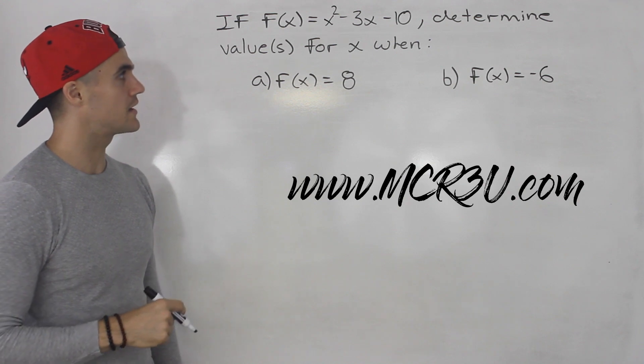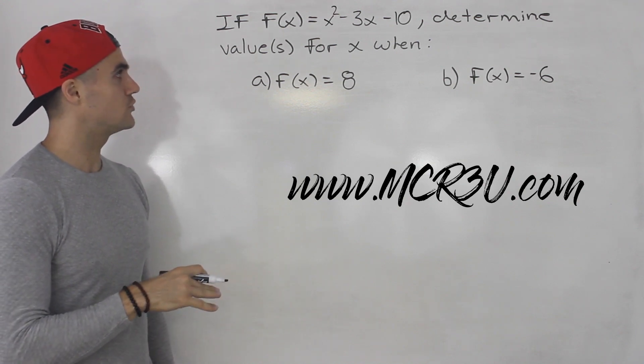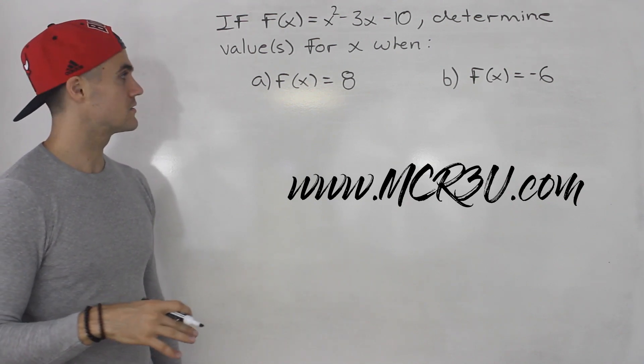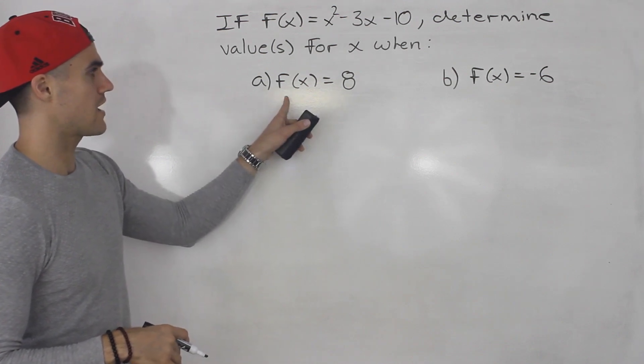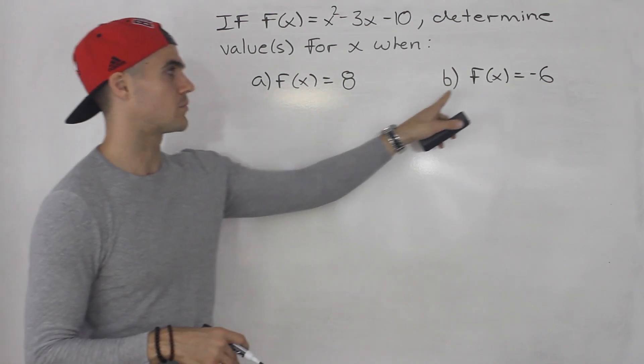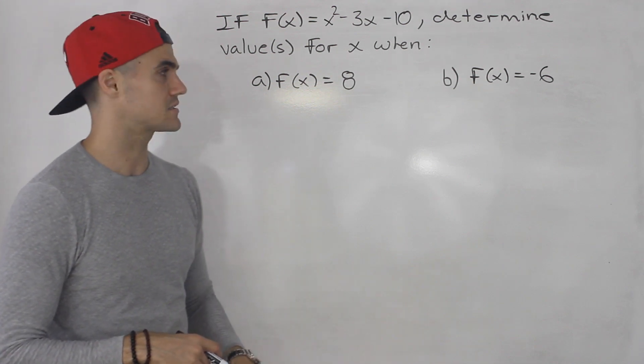If f(x) is x² - 3x - 10, determine the value or values for x when part a, when f(x) equals 8, or part b, when f(x) equals -6.